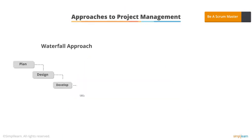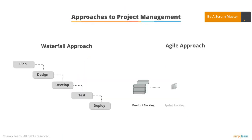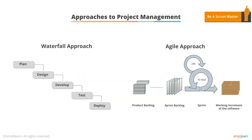There are two main approaches to project management: the traditional waterfall approach and the agile approach. Originally, agile developed as a way to better manage software development projects.